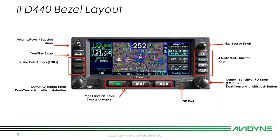On the right side there are four dedicated function keys: direct, procedure, enter, and clear — pretty self-explanatory. The top right knob is our nav source knob. Turning it puts the IFD into VLOC mode, and pushing it puts us into OBS mode.